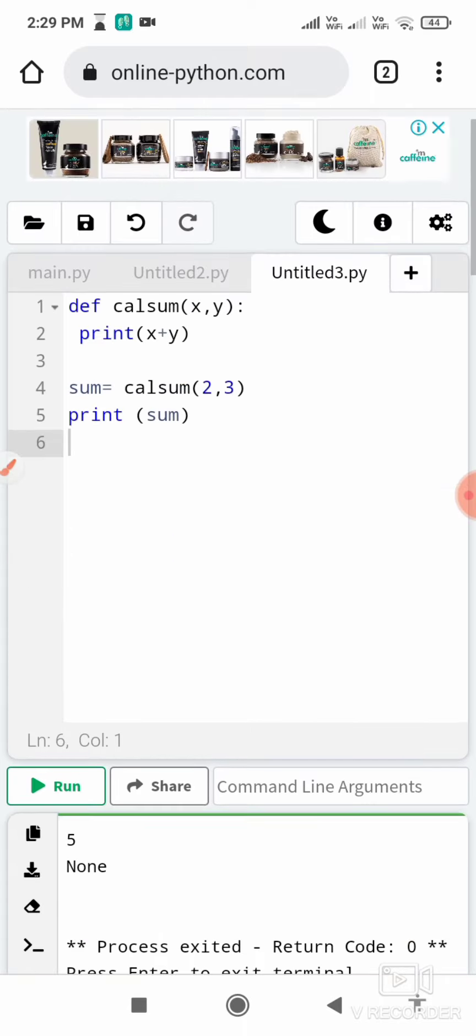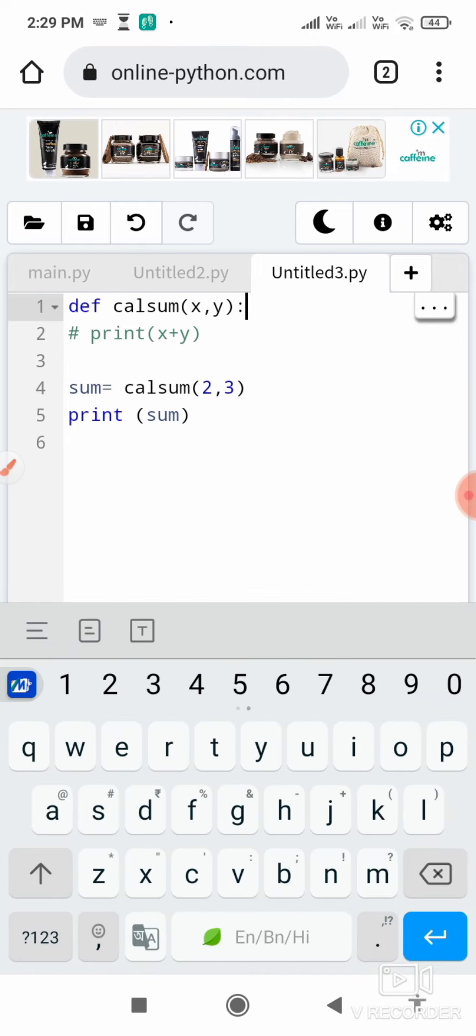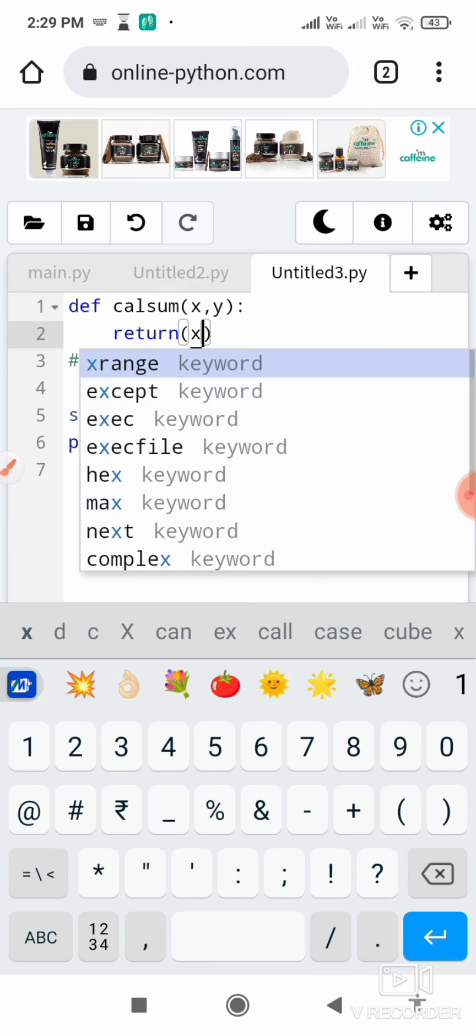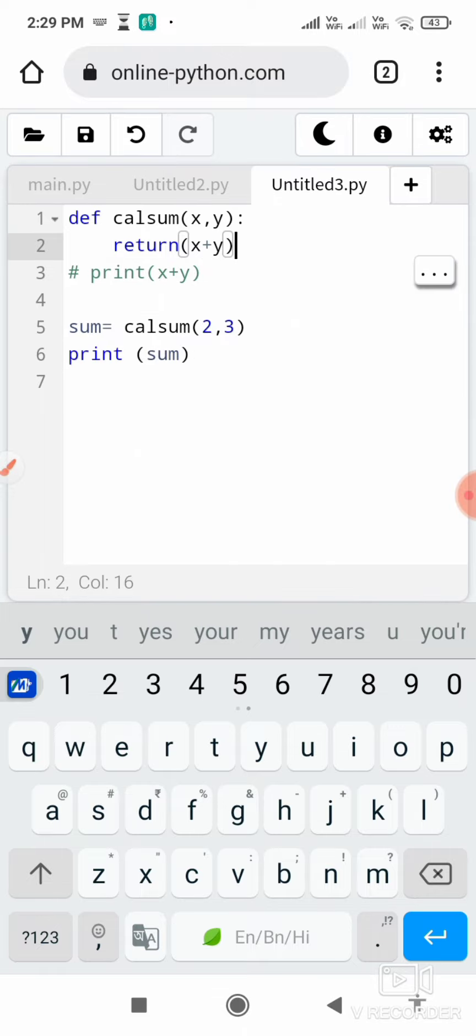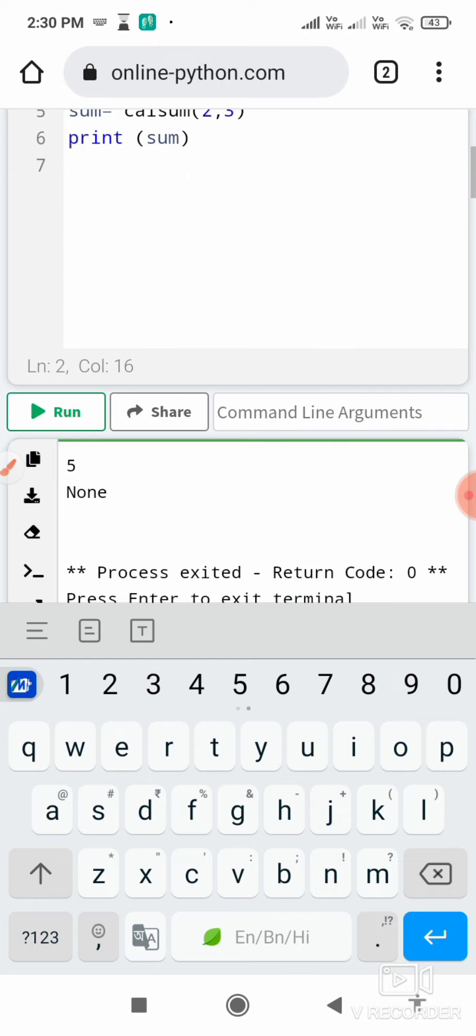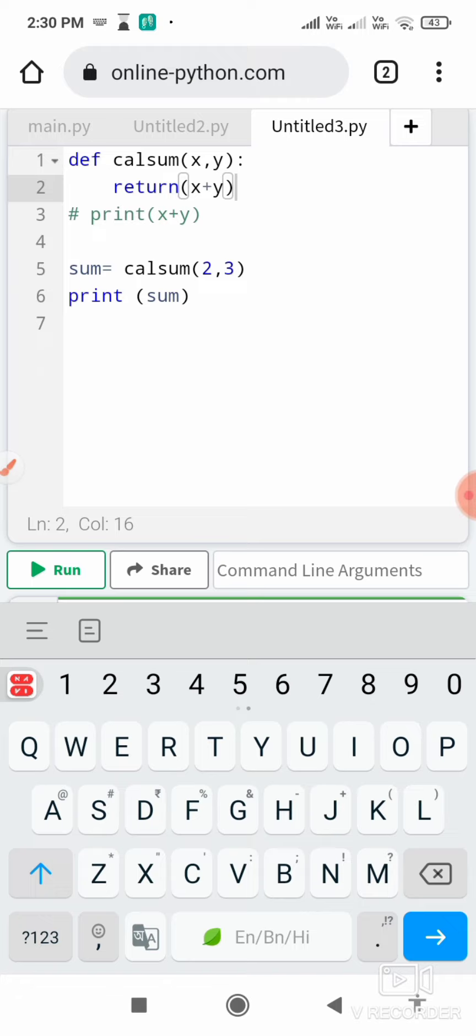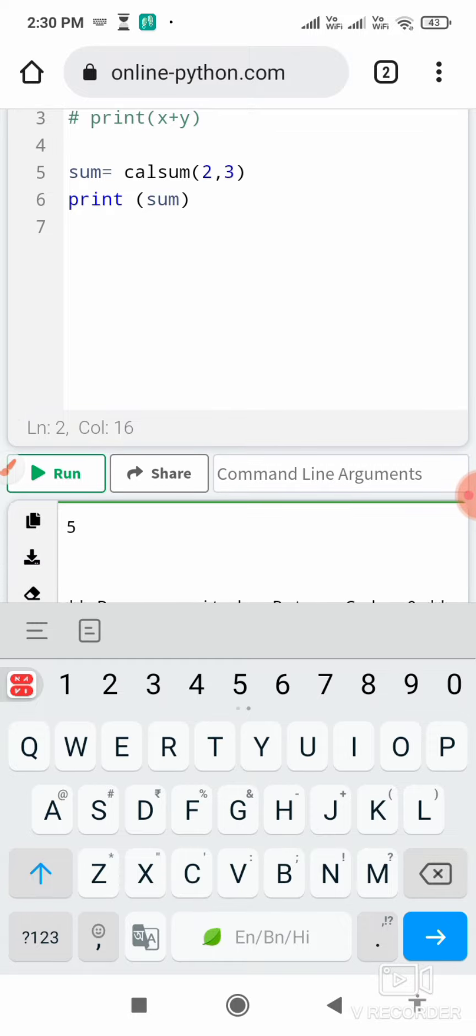If I comment out the print line and instead use return x plus y, which is an expression, then when it returns x plus y I can go ahead and see my value. Yes, it's giving me 5. So if the return statement has a value, it's non-void; otherwise it's void. Now coming into the next program.